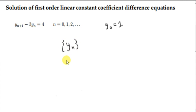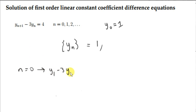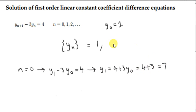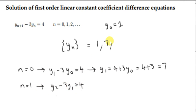The first term is 1. We can get the next term by setting n equal to 0 in the difference equation, giving y(0+1) or y₁ minus 3 times y₀ equals 4. Solving for y₁ gives y₁ equals 4 plus 3·y₀, which is 4 plus 3 times 1, which is 7. So the second term is 7. Setting n equal to 1 gives y₂ minus 3·y₁ equals 4, and we plug in 7 for y₁ to get y₂, and so on.